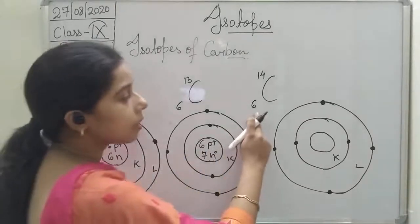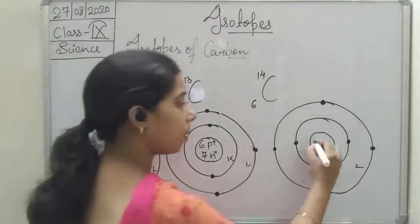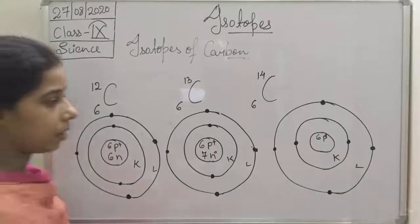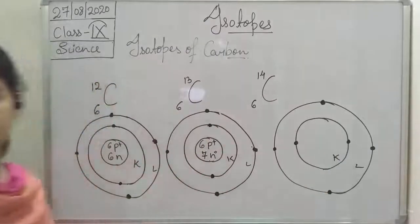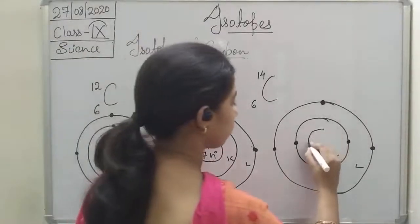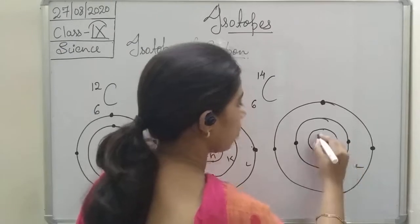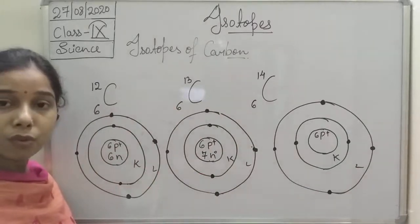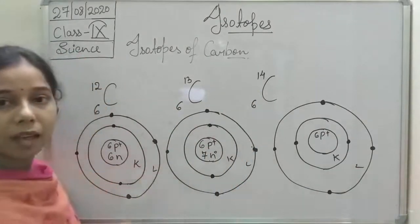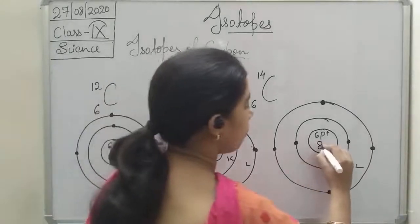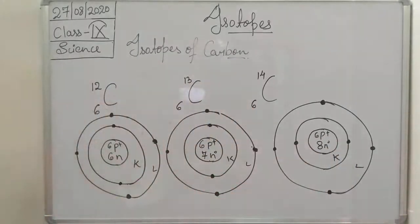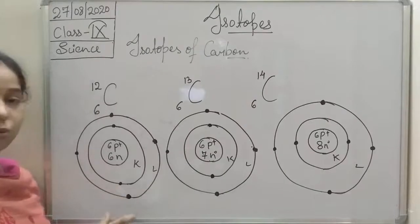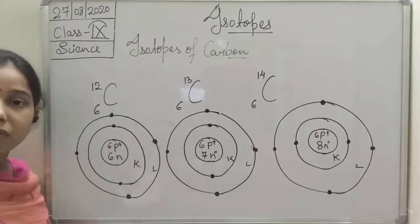For carbon-14, number of protons is again 6. Number of neutrons equals 14 minus 6, which is 8. In all three cases, number of protons is the same but number of neutrons varies. These are the isotopes of carbon.